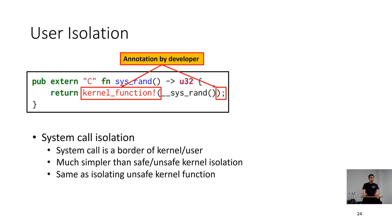Isolating user memory is simpler than isolating the unsafe kernel. As the system call is the border between kernel and user, we isolate system calls as we do for the unsafe function call.